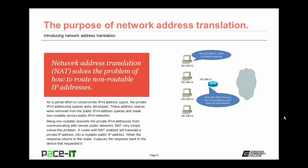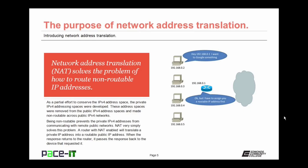As a partial effort to conserve the IPv4 address space, the private IPv4 addressing spaces were developed. These address spaces were removed from the public IPv4 address space and made non-routable across public IPv4 networks. Being non-routable prevents that private IPv4 address from communicating with remote public networks. NAT very simply solves this problem. A router with NAT enabled will translate a private IPv4 address into a routable public IPv4 address. When the response returns to the router, it passes the response back to the device that requested it.